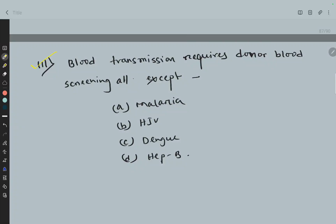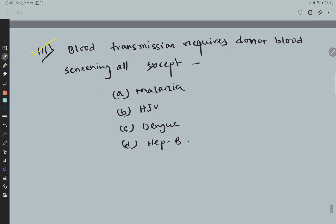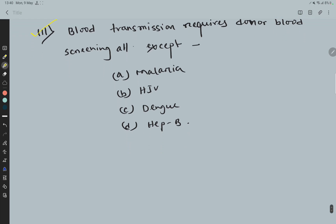Question 111: Blood transmission requires donor blood screening, all except: (a) malaria, (b) HIV, (c) dengue, (d) hepatitis B. Here the correct option is dengue.